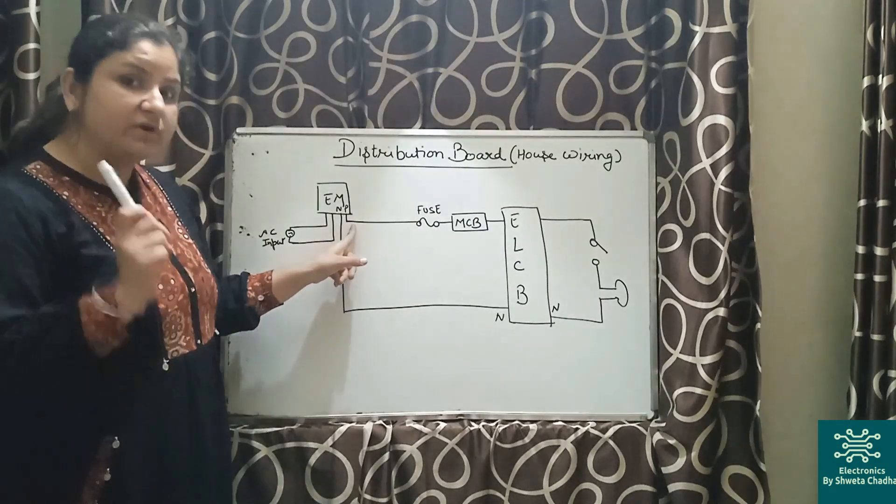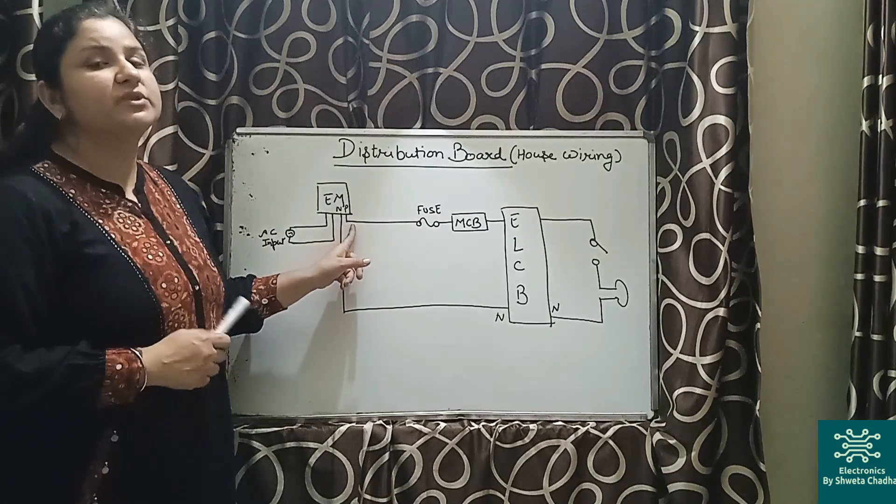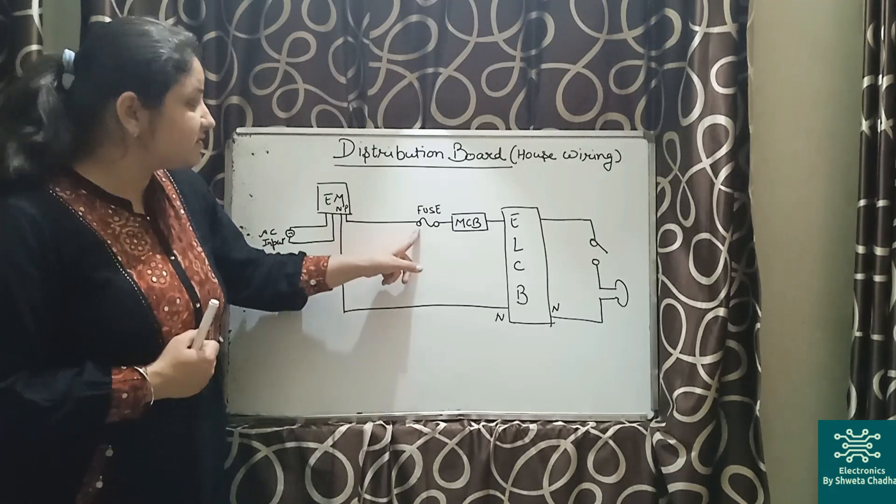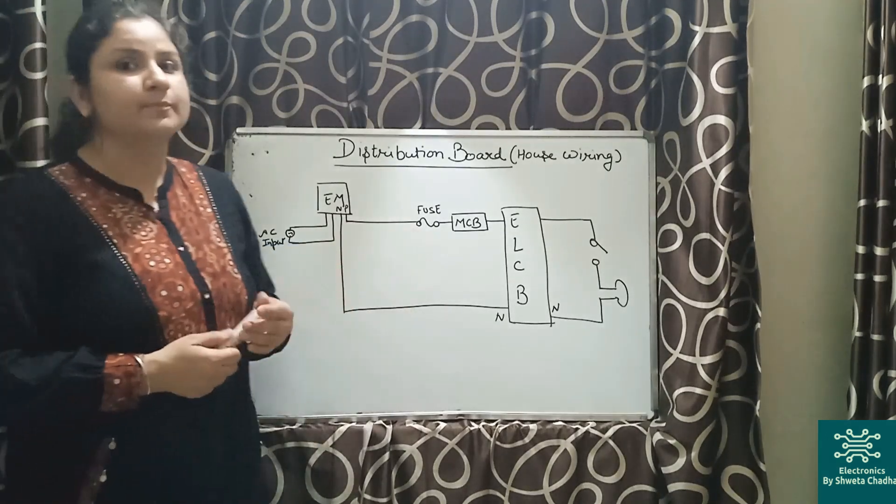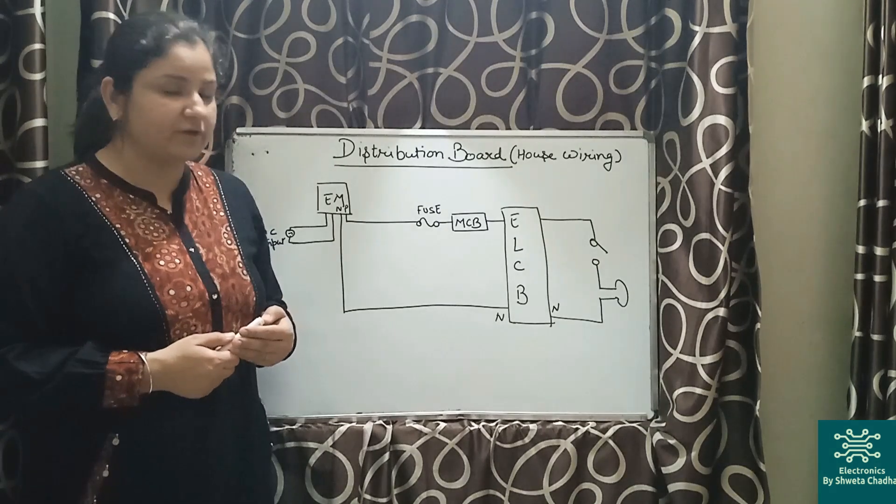Every time, the first device is always going to be the safety device. So the first device that we are going to connect over here is fuse. The KitKat fuse is going to be used over here, after which MCB, miniature circuit breaker.